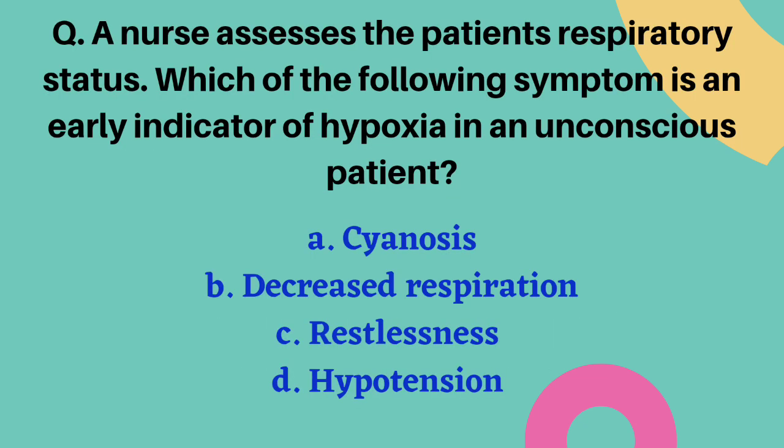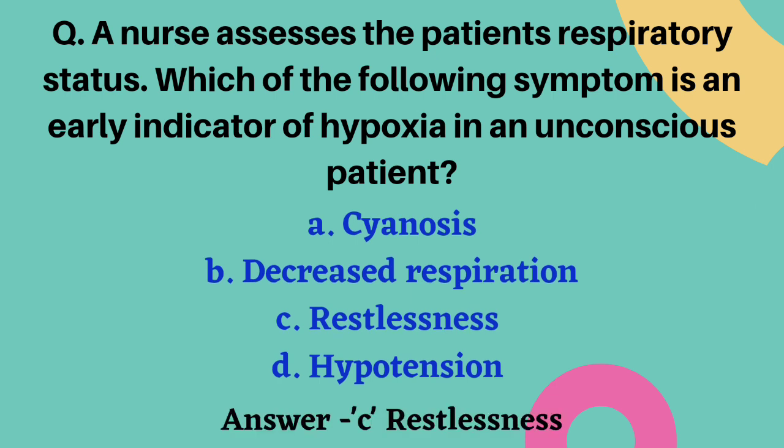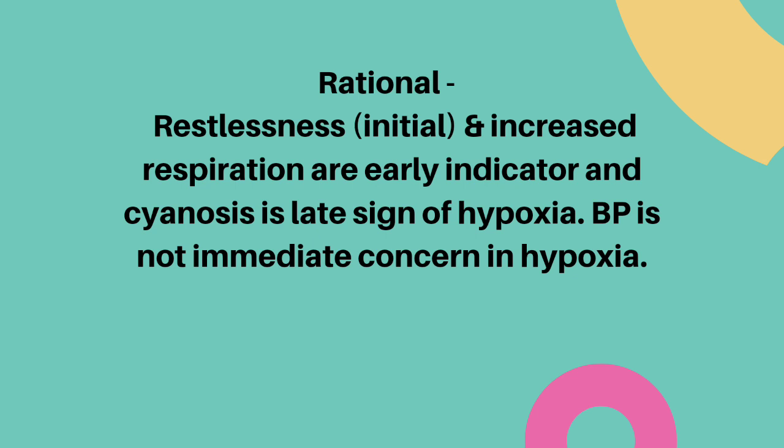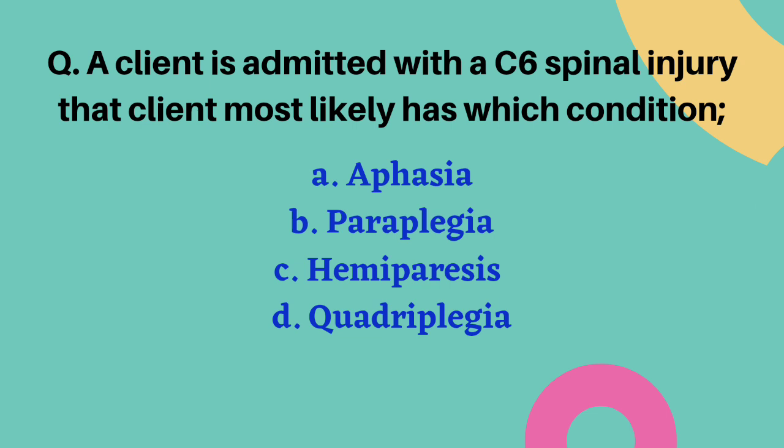A nurse assessing respiratory status — which symptom is an early indicator of hypoxia in an unconscious patient? Options are cyanosis, decreased respiration, restlessness, and hypotension. The correct answer is option C — restlessness. Restlessness and increased respiration are early indicators, while cyanosis is a late sign of hypoxia. Blood pressure is not an immediate concern in hypoxia.